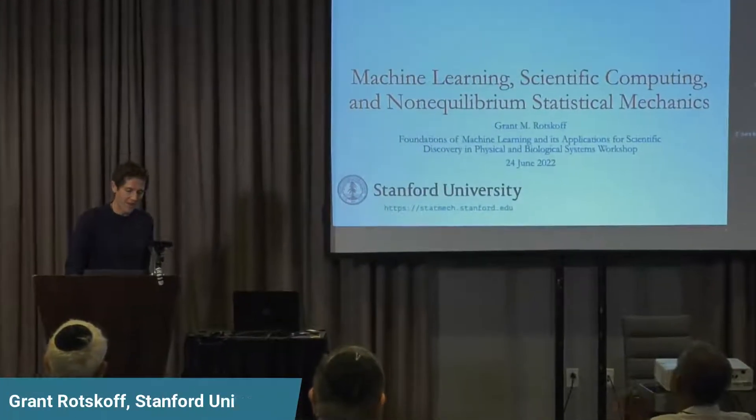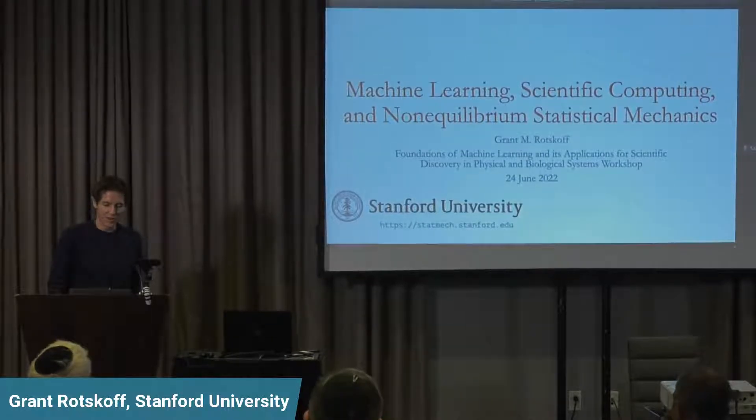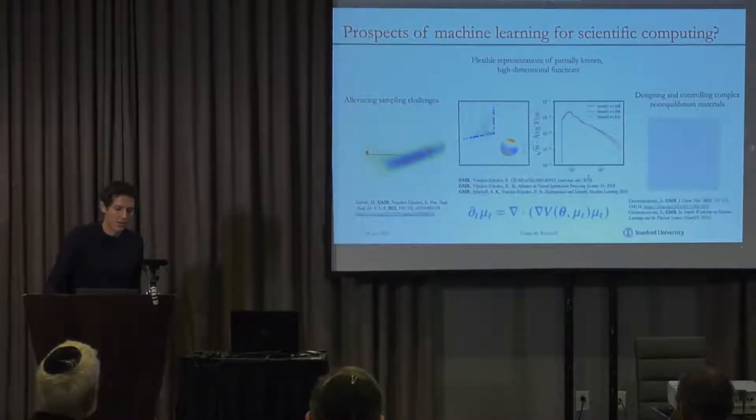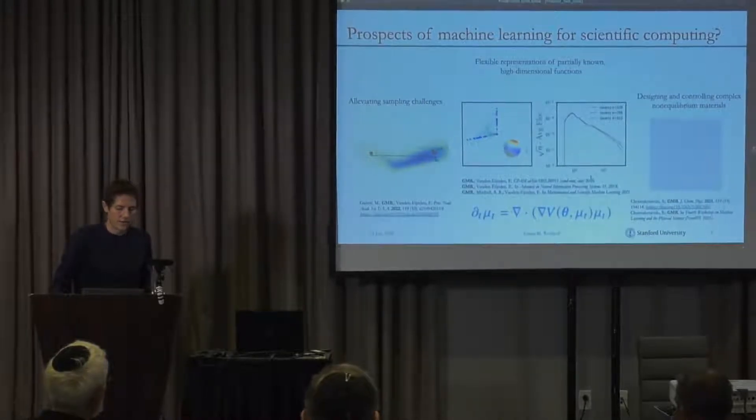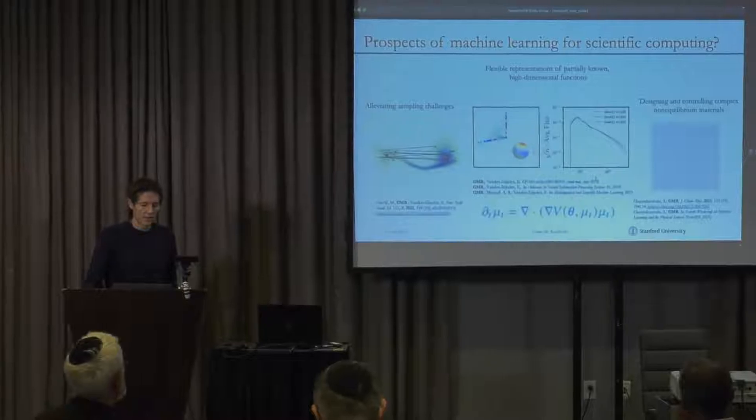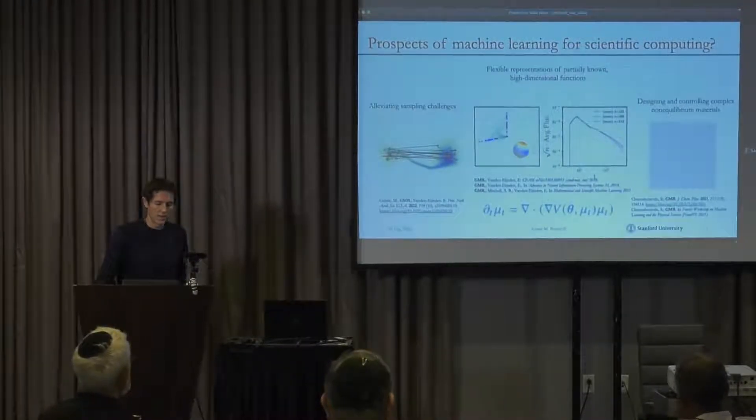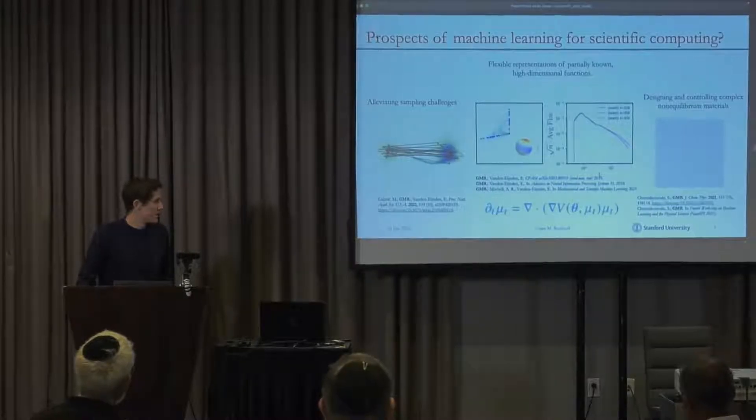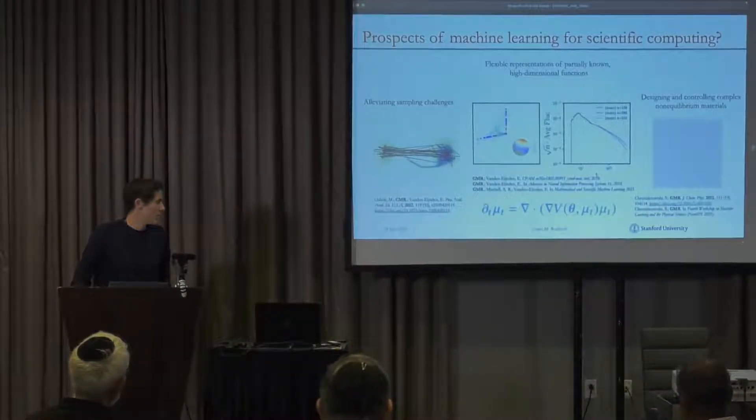Let me just give you a very brief and very high-level overview of the type of work that I do. I work on a number of problems that are related to the interface of machine learning and scientific computing, and one of the things that really motivated us to start working on this was questions that are similar to the ones that were asked today about the dynamics and trainability of neural networks.